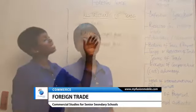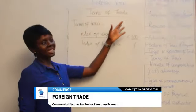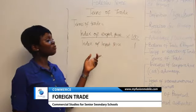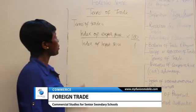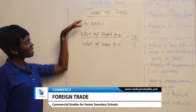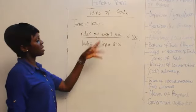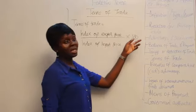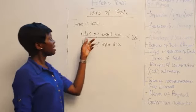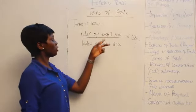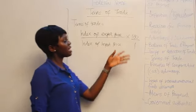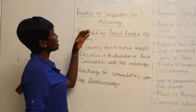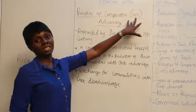Terms of trade is the rate at which a country's exports exchange for its imports. The formula is: index of export price divided by index of import price, multiplied by 100.